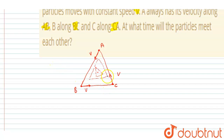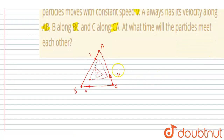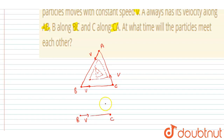Now let's find the velocity of approach. Since the triangle is always equilateral — initially equilateral and after time t the side length decreases but it remains equilateral — we can find the velocity of approach. Let's say this is particle B moving in one direction and particle C moving at 60 degrees to it.